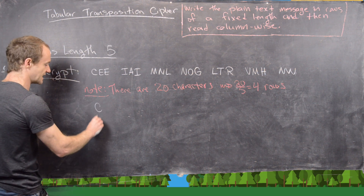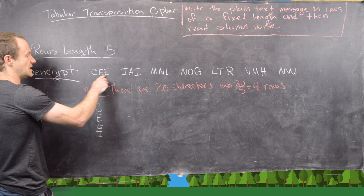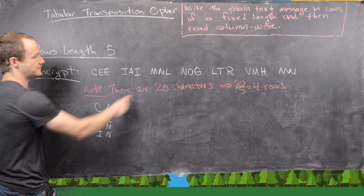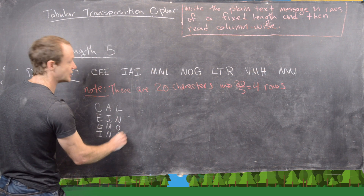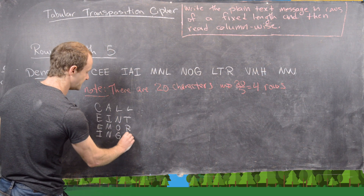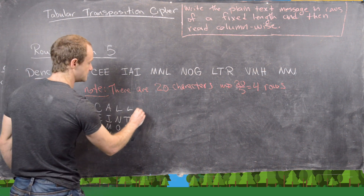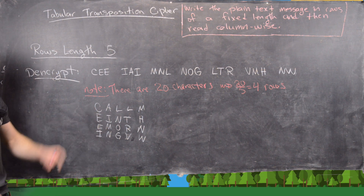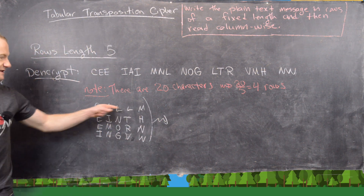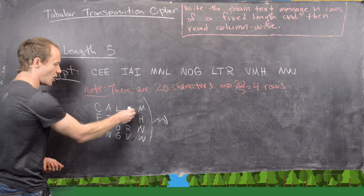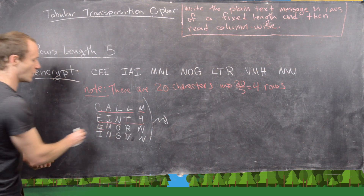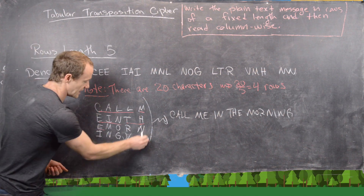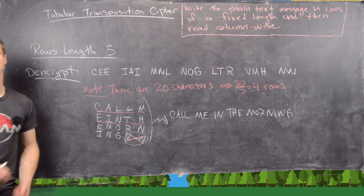We write the ciphertext in columns of 4: C-E-E-I, A-I-M-N, L-N-O-G, L-T-R-V, M-H-N-W. Reading this row-wise, we get 'call me in the morning'. The letters V and W at the end were padding, so we don't need those.